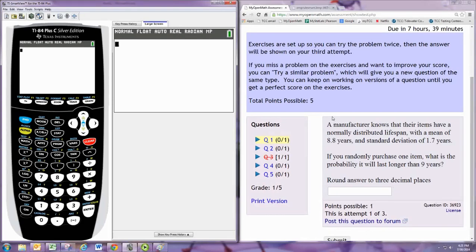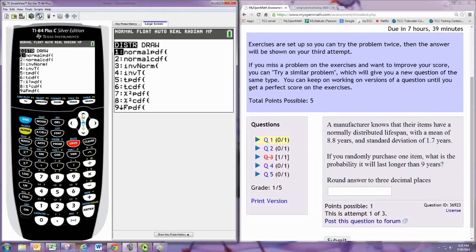So we use the normal distribution and we're looking for the probability that the random variable is greater than 9. On the graphing calculator, we get that with second bars in the distribution menu and then you want normal CDF.